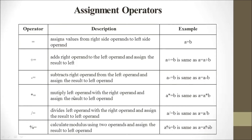Multiplication equal to (*=) multiplies the left operand with the right operand and assigns the result to the left — A *= B is the same as A = A * B. Division equal to (/=) divides the left operand by the right operand and assigns the result — A /= B is the same as A = A / B. Modulus equal to (%=) calculates the modulus using two operands and assigns the result to the left — A %= B is the same as A = A % B.